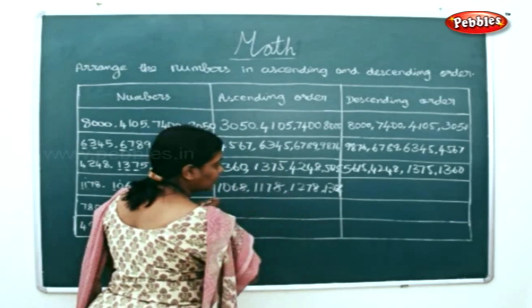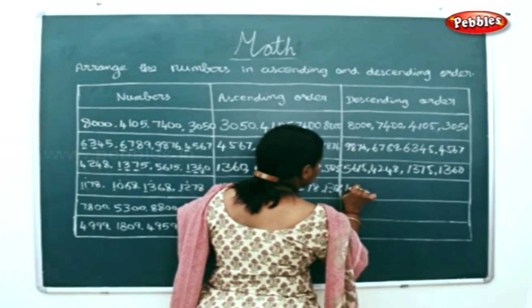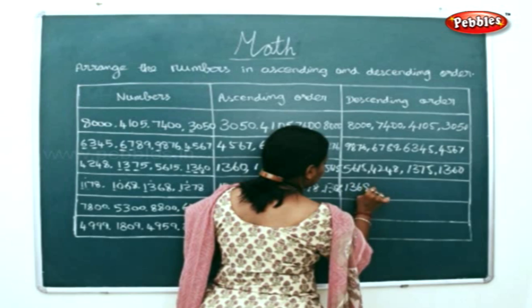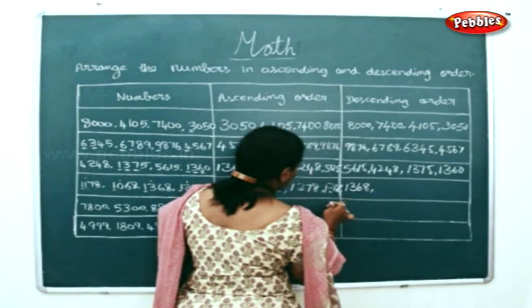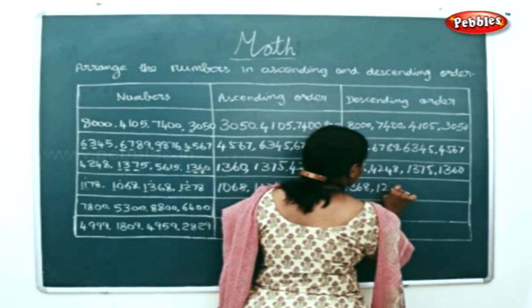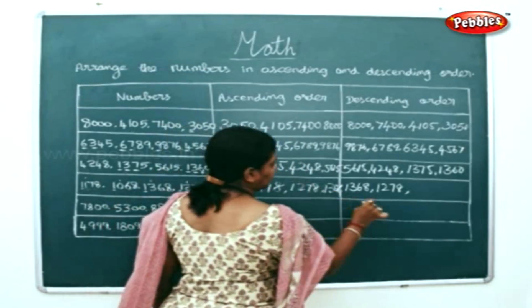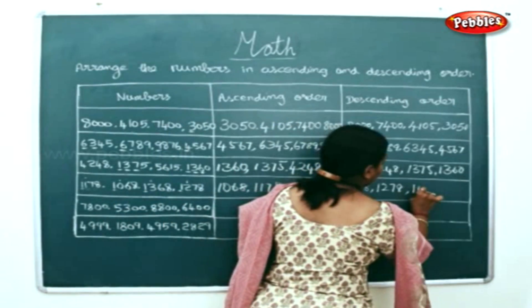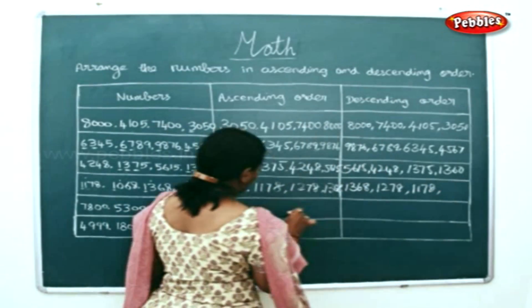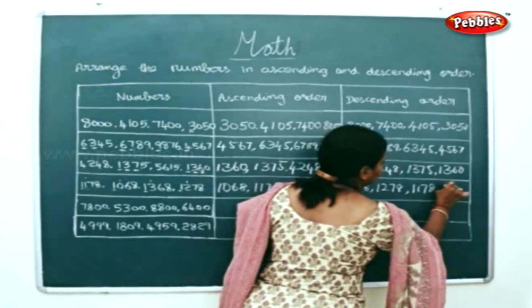Now, just in the reverse order, we will do it for descending order: 1, 2, 7, 8; 1, 1, 7, 8; and 1, 0, 6, 8.